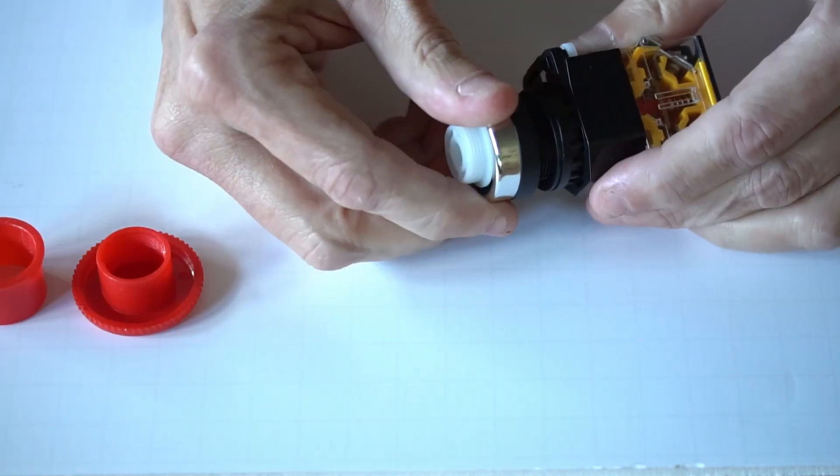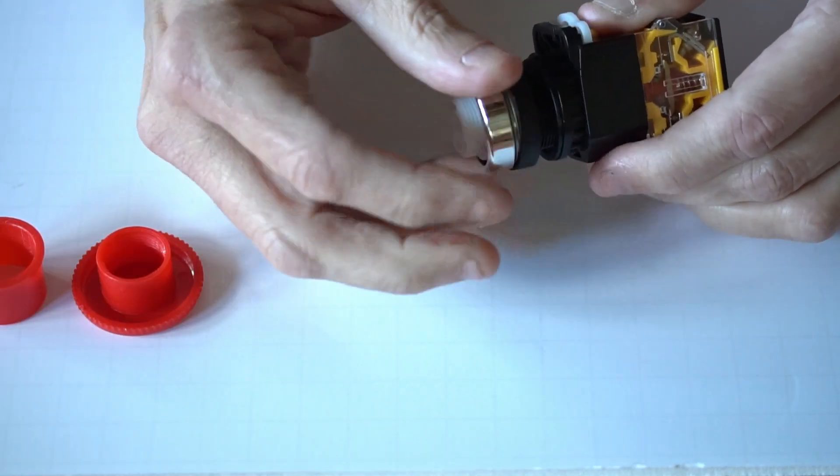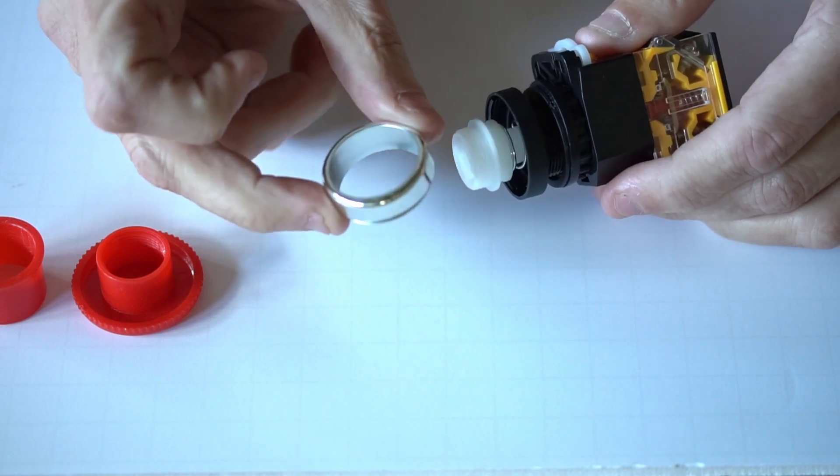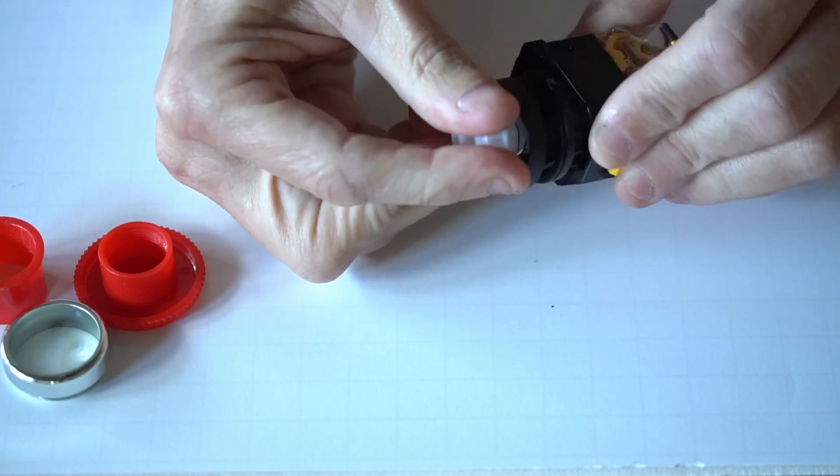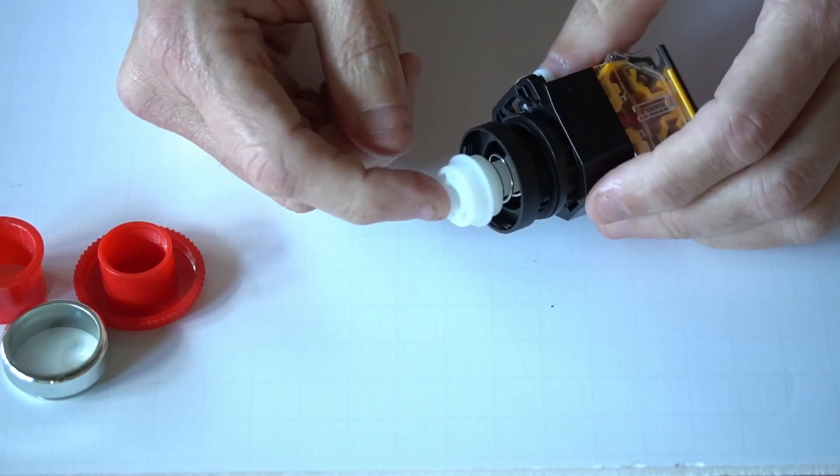This bushing can be removed. You can take off this screw and you can see the spring and mechanism that provides the function of the switch.